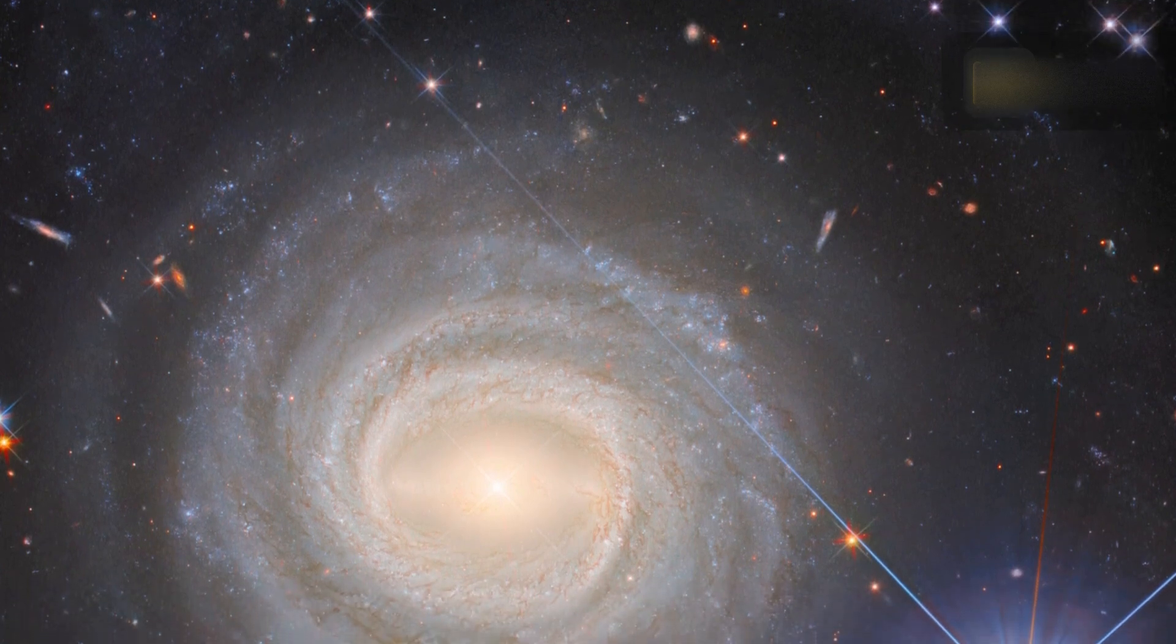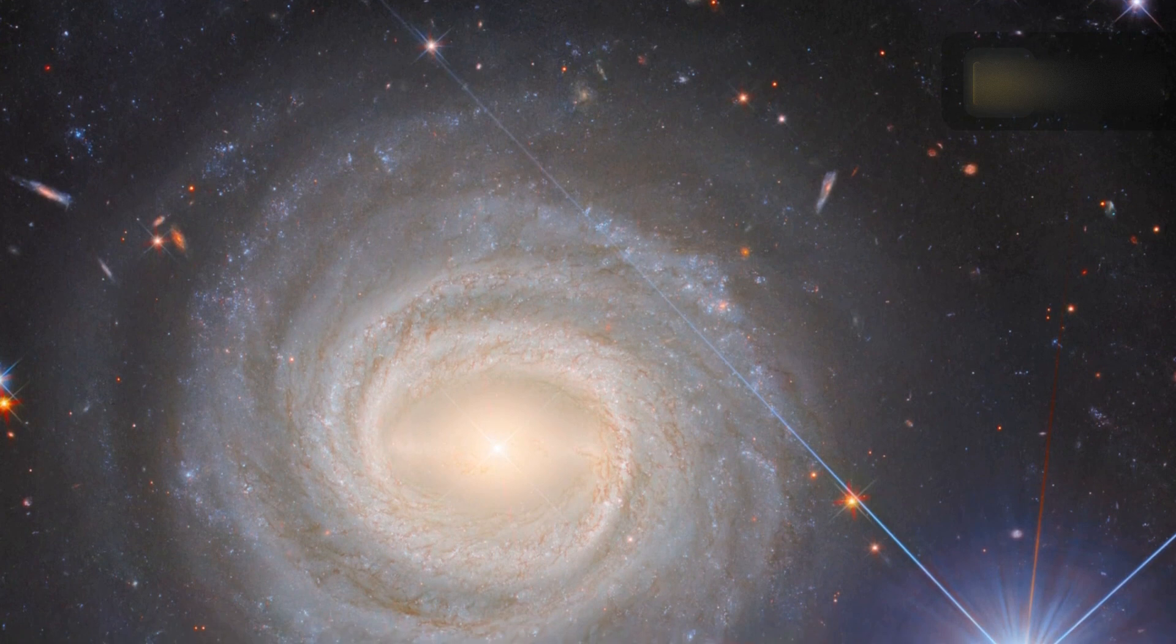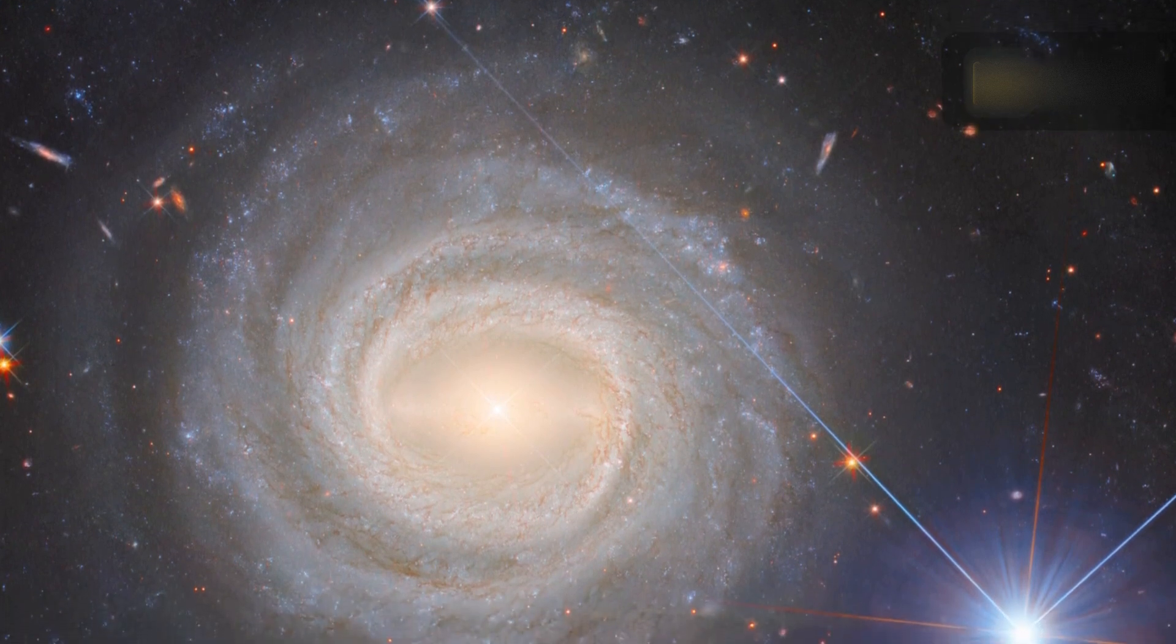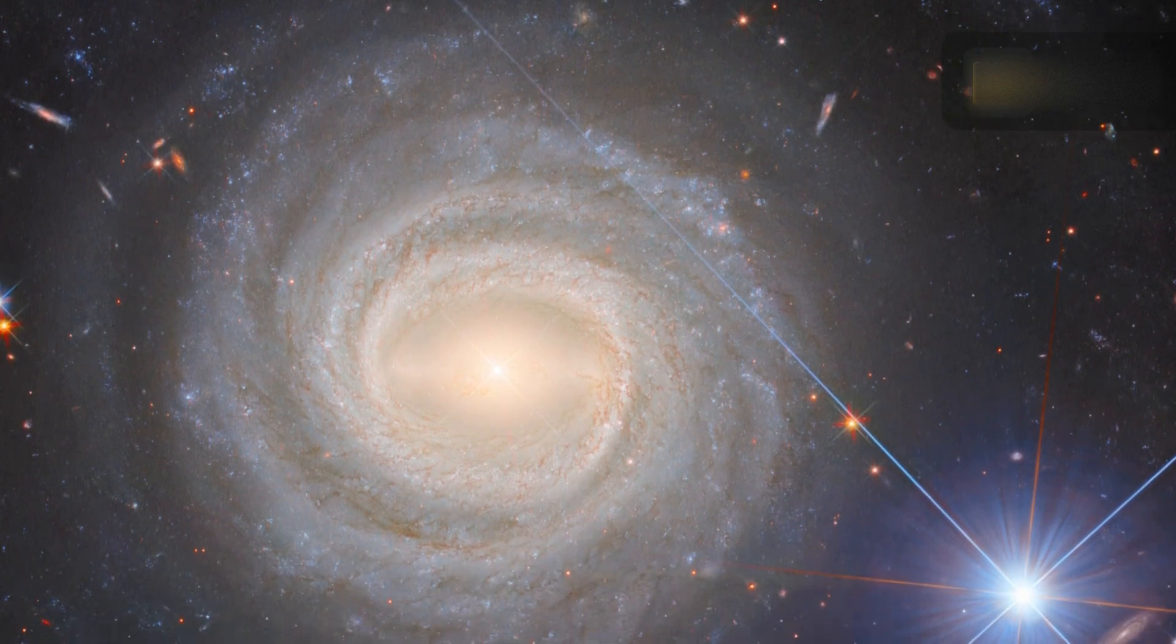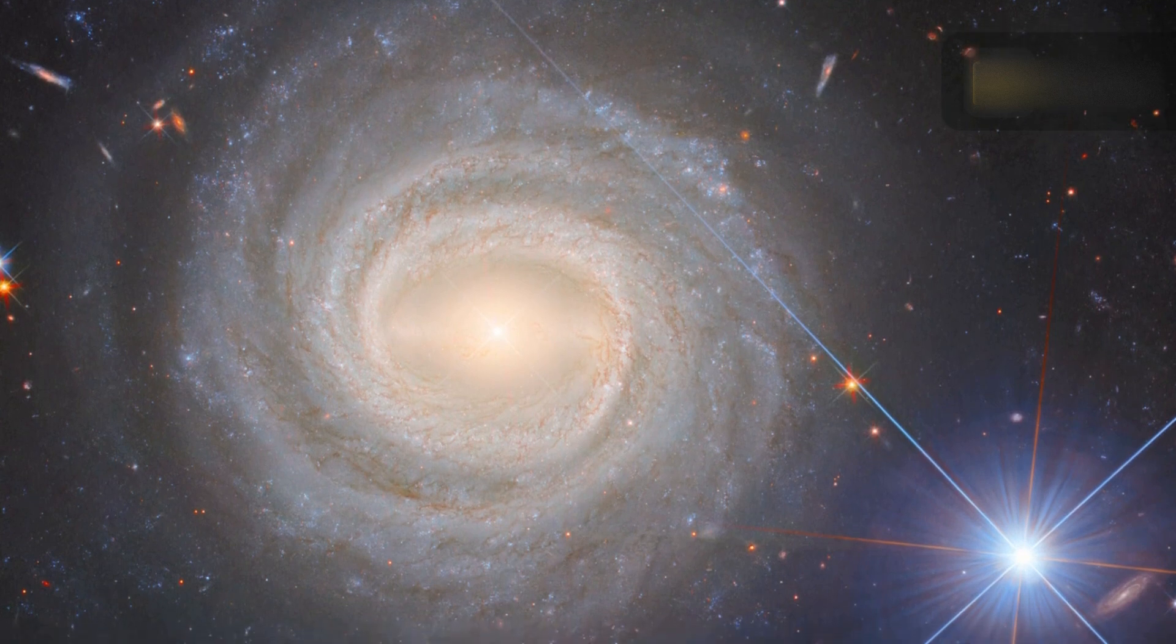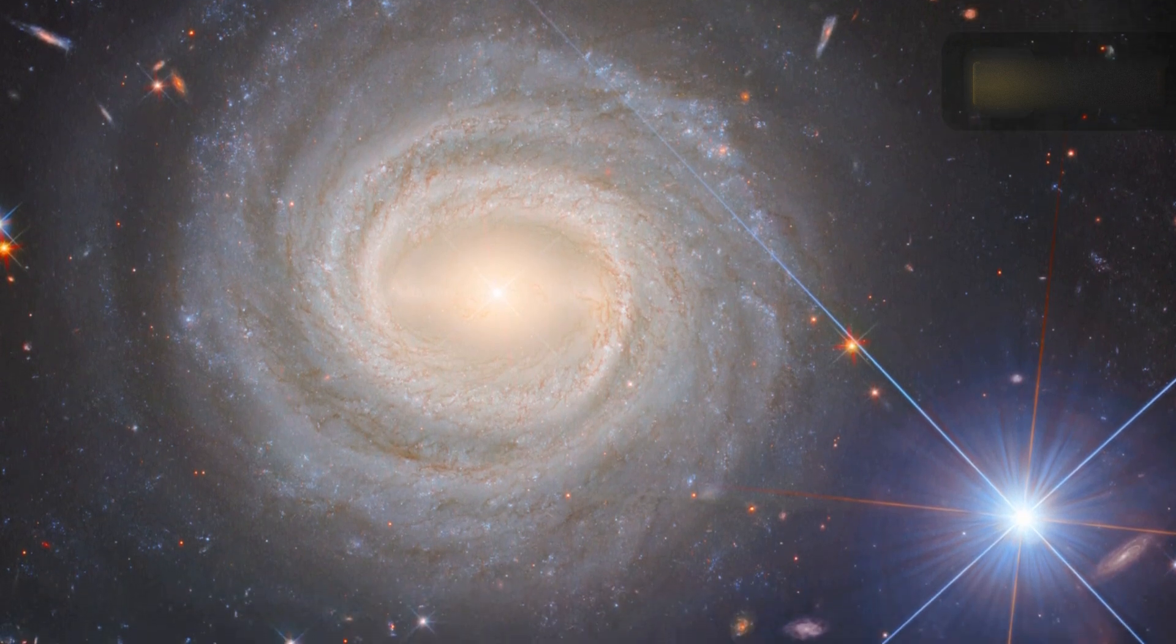This image features NGC 3783, a bright-barred spiral galaxy about 130 million light-years from Earth, that also lends its name to the eponymous NGC 3783 galaxy group.